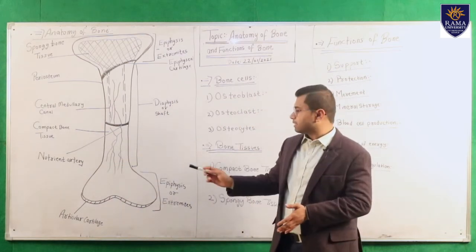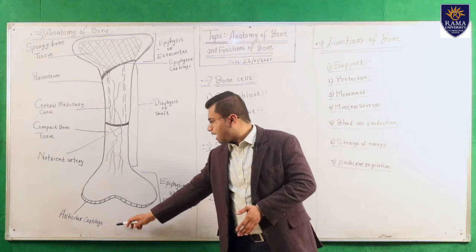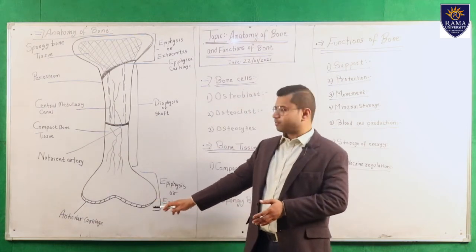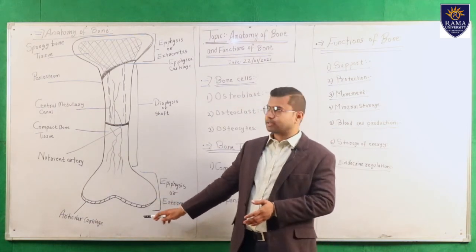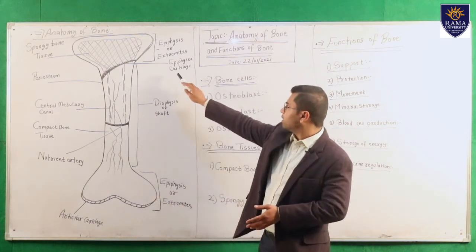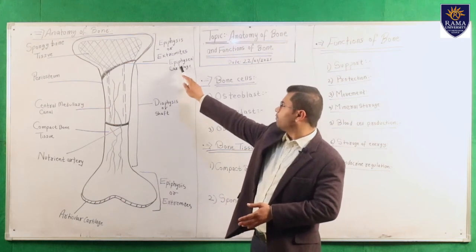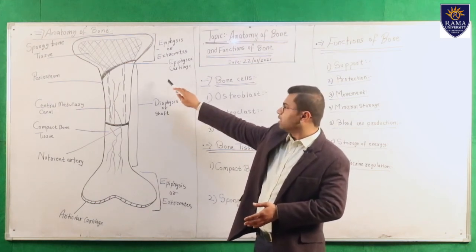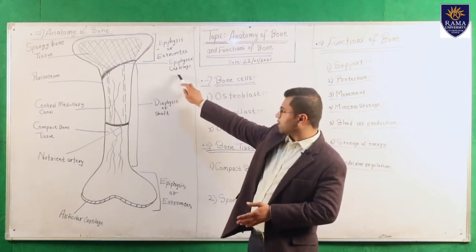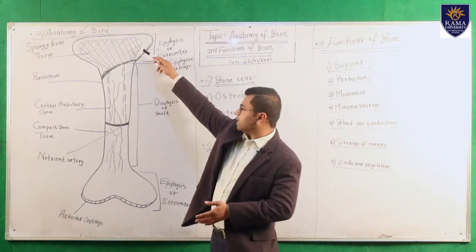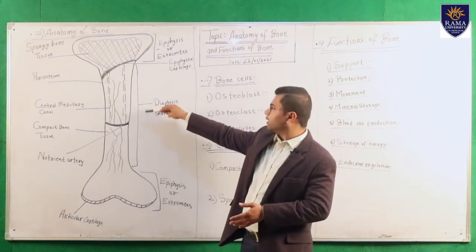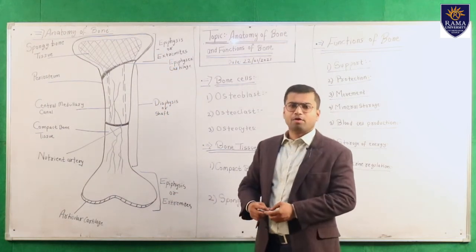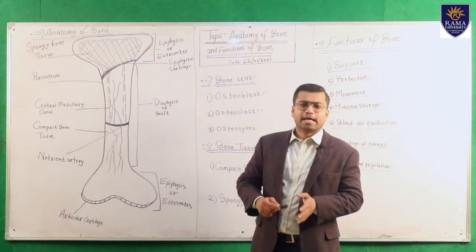There is also articular cartilage present at the end of the epiphysis. Additionally, the epiphyseal cartilage divides the epiphysis and the diaphysis. This covers the anatomy of bone.